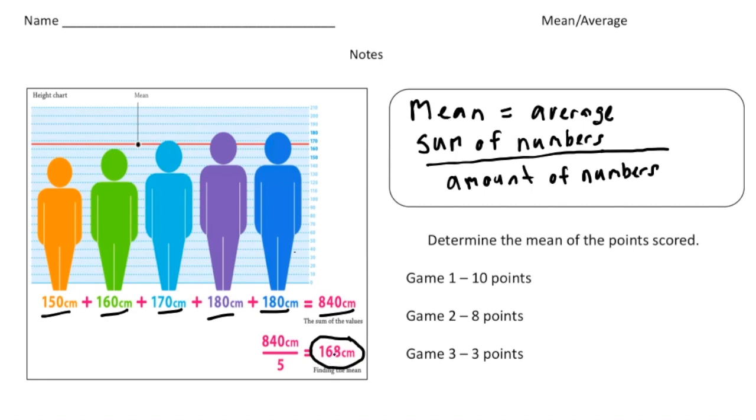So let's do one more. It says determine the mean of the points scored. So here we have three different sets of data. We have 10 points in game one, 8 points in game two, and 3 points in game three. So we need to add up 10 plus 8 plus 3 and divide that by the number of games which is 3. So 10 plus 8 is 18 plus 3 is 21, and then we're going to divide that by 3, and 21 divided by 3 is 7. So the average is 7 points per game.